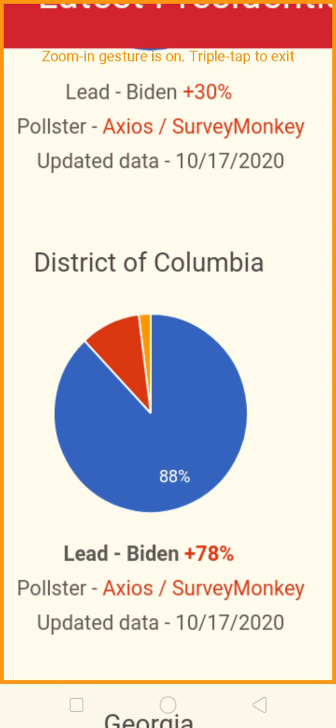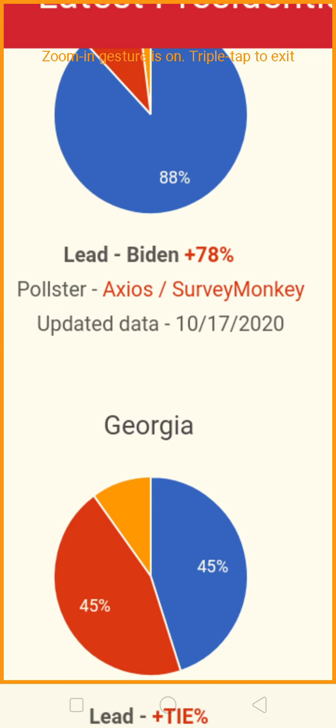Let's check out District of Columbia. Joe Biden is leading — that is not even a contest. 88% — it's off the screen, it doesn't even register. That's a 78-point lead — probably 88 to 10%. That's for Joe Biden. Let's check out Georgia.